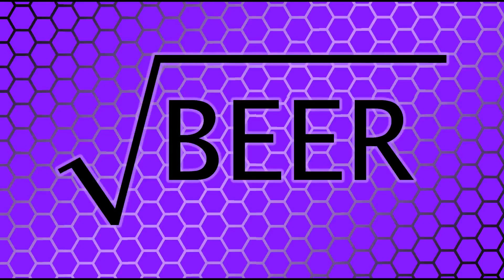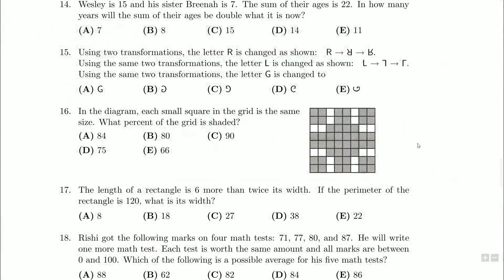Hello everybody, and thank you for joining me once again. We're on question number 16 on the 2008 Grade 7 Gauss contest. In the diagram, each small square in the grid is the same size. What percent of the grid is shaded?